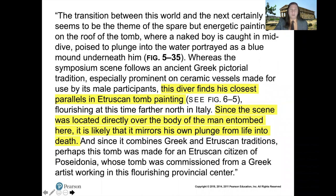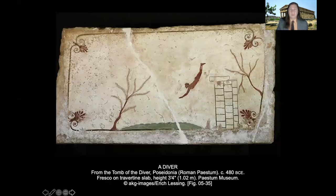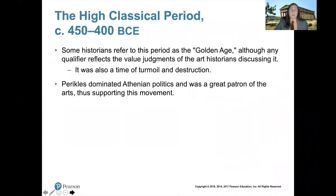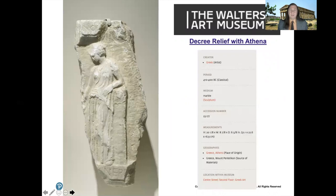The high classical period is considered by art historians to be the golden age. Pericles was the political leader who paid for a lot of the artwork. The Decree Relief with Athena from the Walters is unique in that she's not armed and very relaxed — she's leaning on her aegis, her magical goatskin armor with the portrait of the Medusa on it. She's usually shown with a shield and wearing her aegis. It's made of pentelic marble, the highest quality marble used to make the Parthenon. The idea of her removing the aegis has political significance, connecting her to Irene, the goddess of peace.